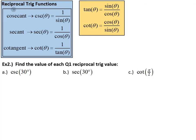Let's review the three reciprocal trig functions. Cosecant, labeled CSC, is the reciprocal of sine — 1 over sine. Secant, abbreviated SEC, is the reciprocal of cosine. And cotangent, COT, is the reciprocal of tangent. An extra note about cotangent: remember that tangent was defined as sine divided by cosine — the y-coordinate over the x-coordinate. Its reciprocal is cosine over sine, so that's an extra definition for cotangent that we may need.